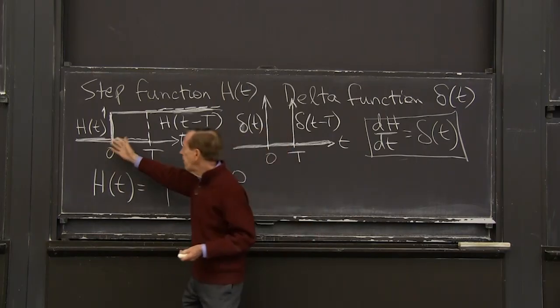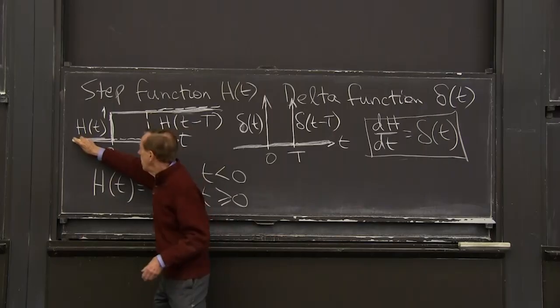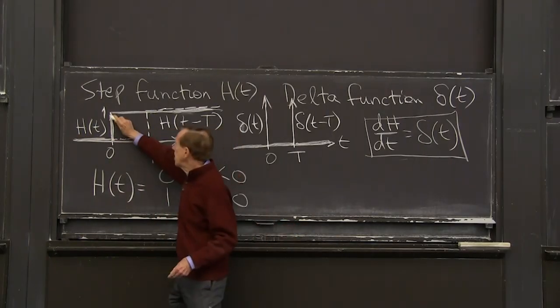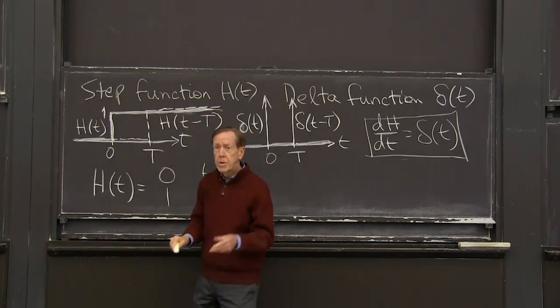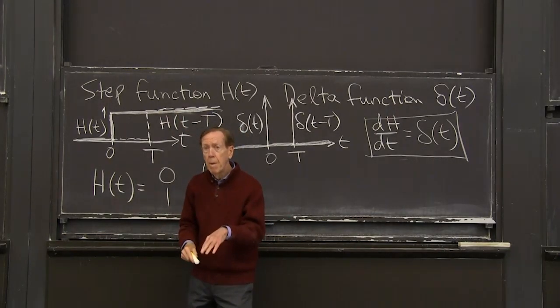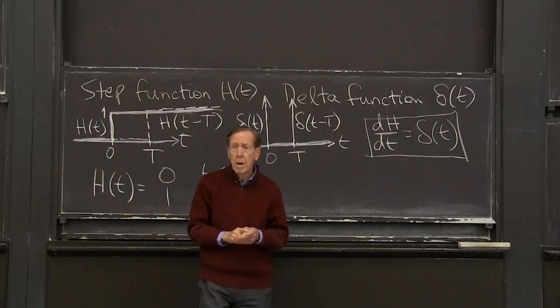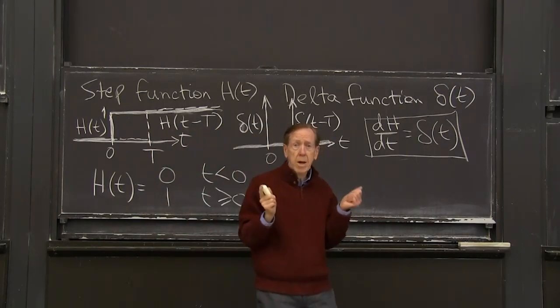And take its derivative. So what's the derivative of this step function? Well, the function is 0 along there, so the derivative is 0. The function is constant along here, so the derivative is again 0. It's just at this one point everything happens. So now this is the delta function.